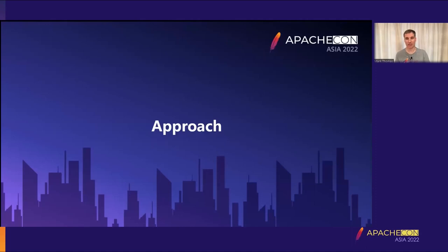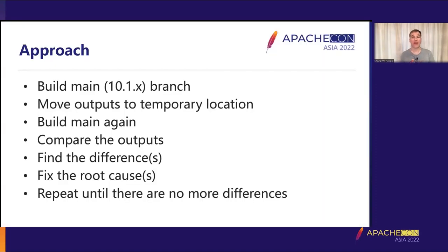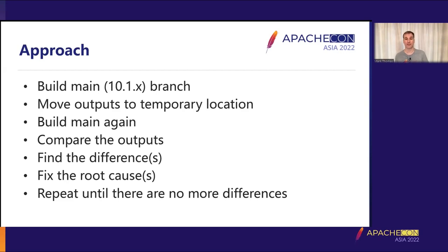So how did we approach this? The overall approach is pretty simple. Build it once — we worked with the main 10.1 branch to start with. Take those build artifacts, move them to a temporary location, do a clean build, and compare the two. There are going to be differences. You find the differences, work out the root cause, and fix that root cause. You just go around that loop until there are no more differences.